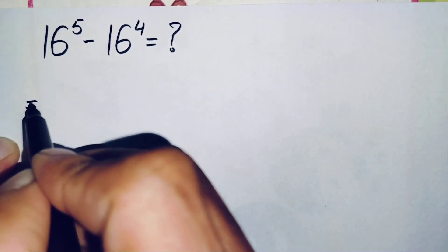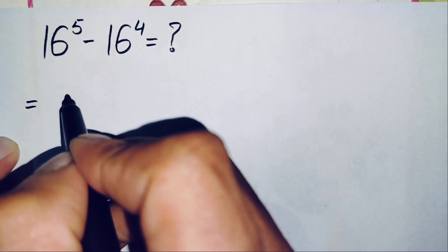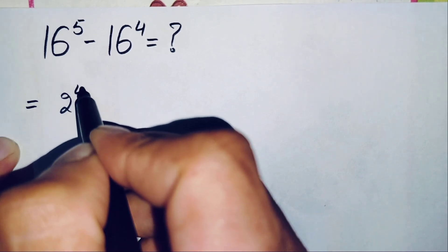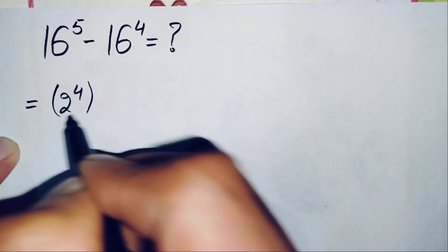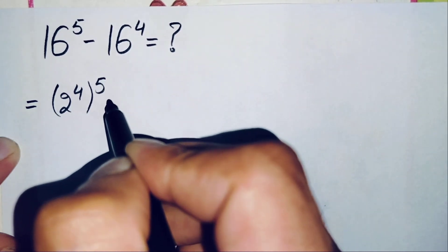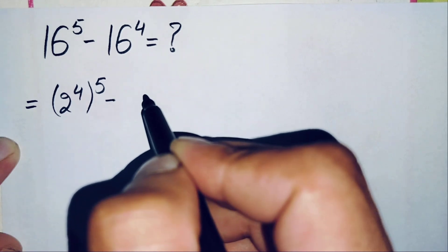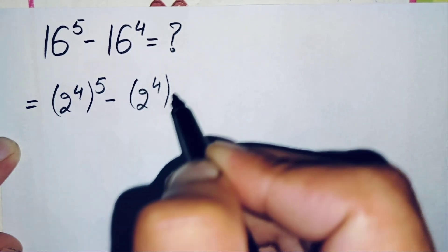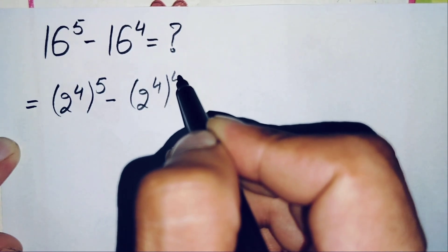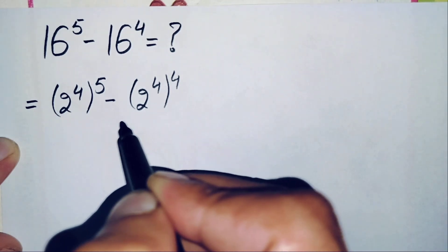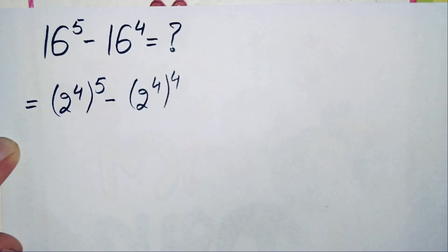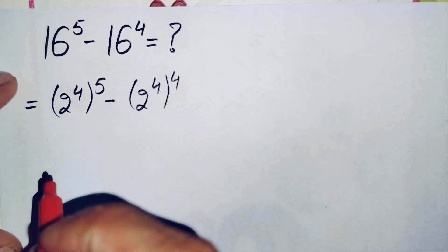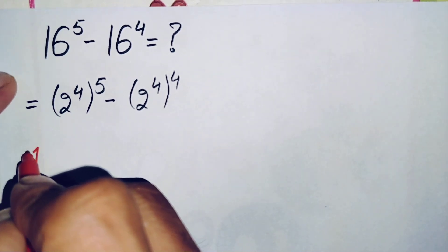We can write 16 as 2 raised to power 4, so the expression becomes: 2 raised to power 4, whole raised to power 5, minus 2 raised to power 4, whole raised to power 4. In these two terms we will use an exponential math property — we will multiply the powers with each other.